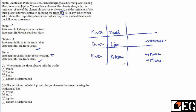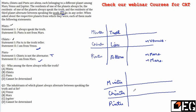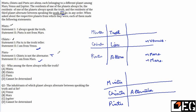Now check the second case: if Chintu is an alternator. Check the statement given by Pintu — if Pintu is a truth-teller, he said 'Chintu is not the alternator,' but Chintu is an alternator, so the statement given by Pintu is false. That means Pintu cannot be the truth-teller.